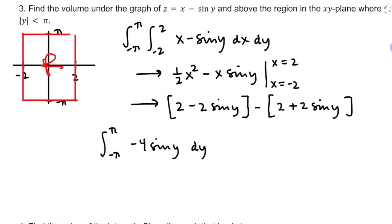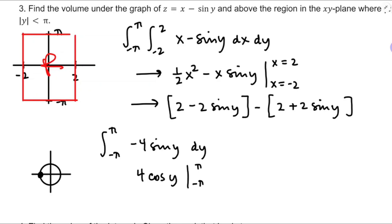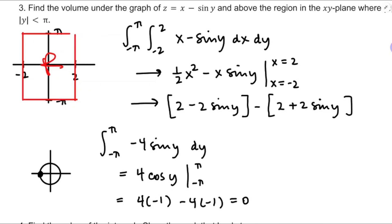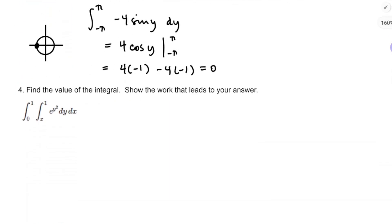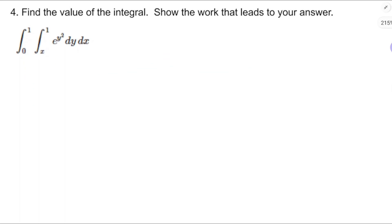The antiderivative of negative 4 sine y would be positive 4 cosine y, as y runs from negative π to π. Thinking about the unit circle: at θ = π and θ = −π, cosine equals negative 1 — so this thing is unchanged. It's going to be 4 times negative 1 minus 4 times negative 1, which equals 0. That's kind of a letdown, but x minus sine y has got symmetry over that region — if you graphed it on a 3D grapher you'd see it's symmetric across the xy-plane.